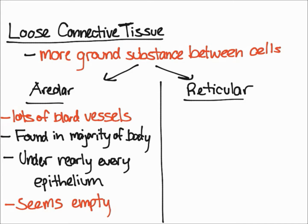Areolar tissue has fibers that are loosely organized and they have a lot of blood vessels. It's found in tissue sections from almost every part of the body, so you can imagine how important it is to learn about this tissue. Additionally, every epithelium — or nearly every epithelium — rests on top of areolar tissue.